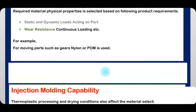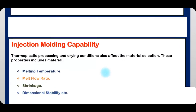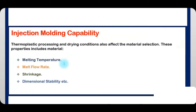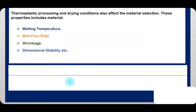Injection molding capability — thermoplastic processing and drying conditions also affect material selection. These properties include material melting temperature, melt flow rate, shrinkage, and dimensional stability.